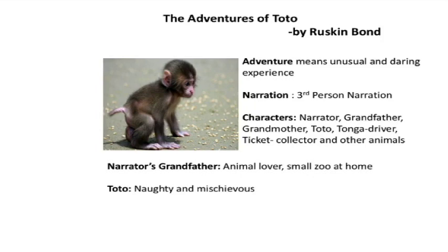When we come across any story, there are different types of narration. First person narration is where the story starts with 'I,' and we also have third person narration. This particular story, Adventures of Toto, is told in third person — the narrator tells the story using 'he,' 'she,' 'they.'